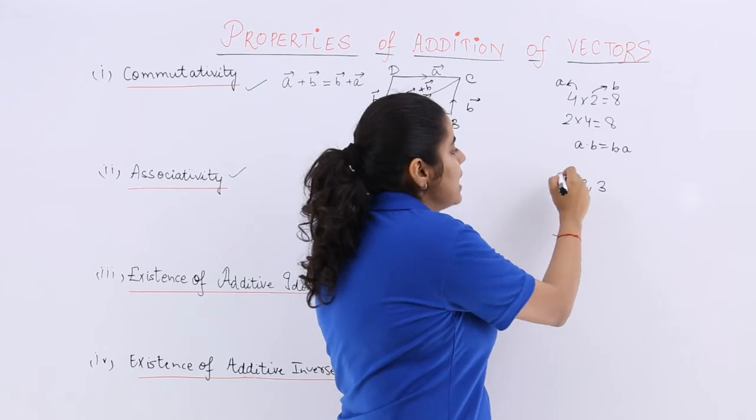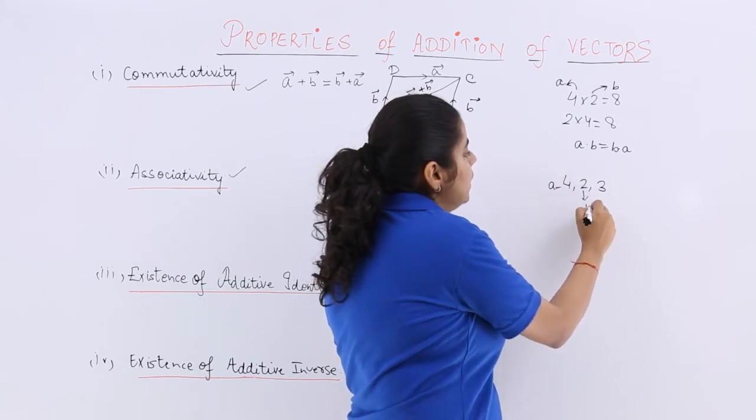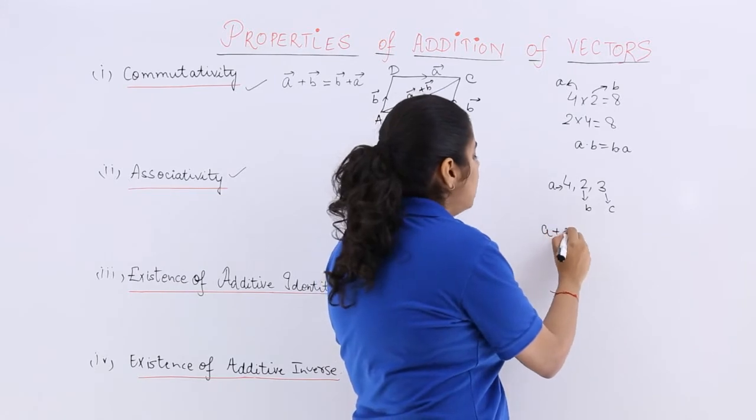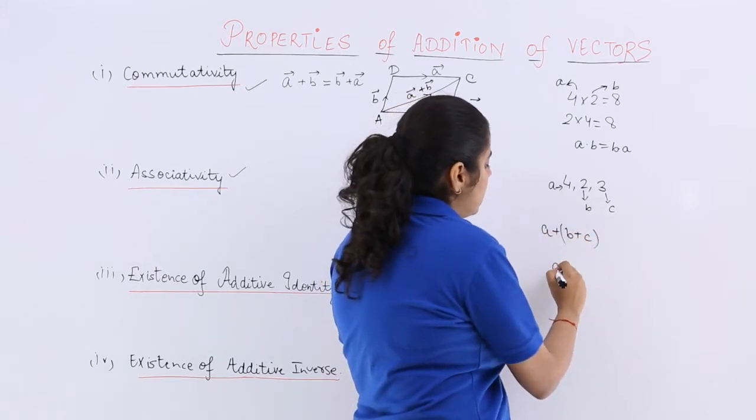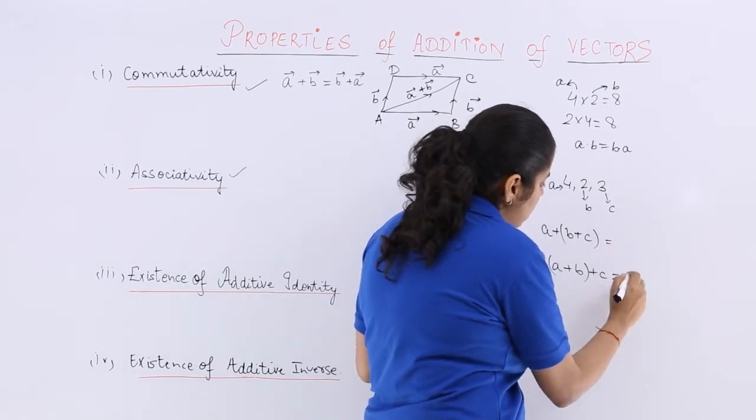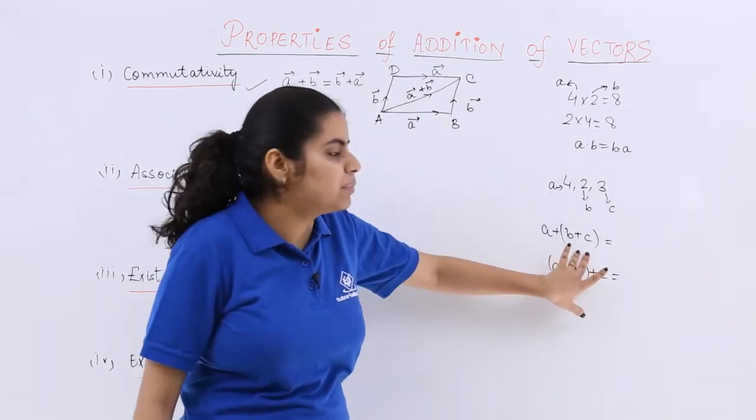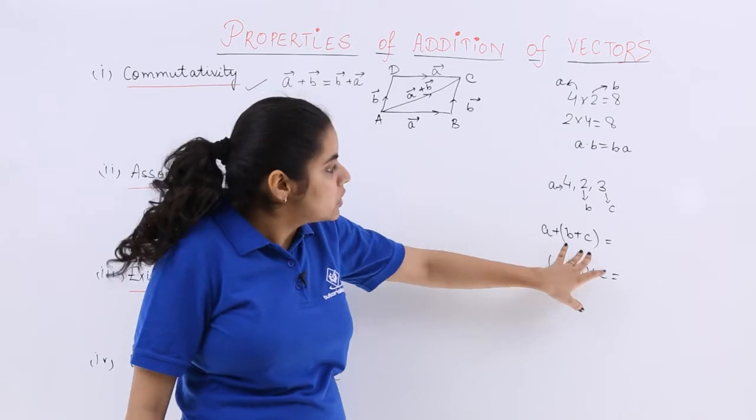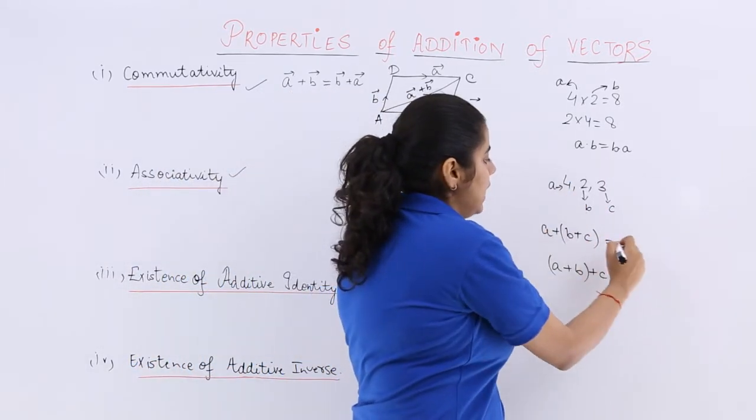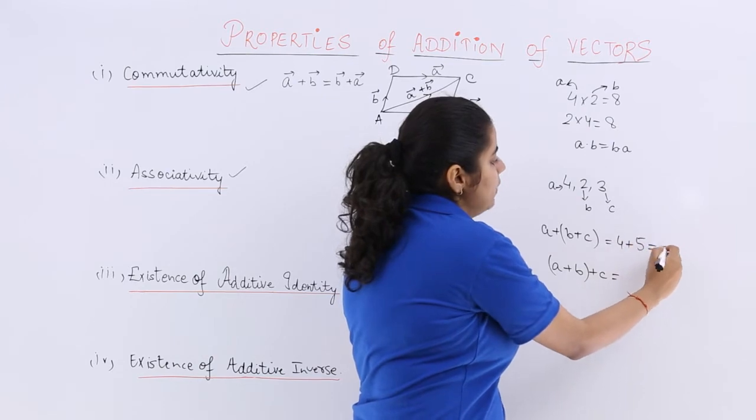This again I will show you with the help of mathematical numerical example. Suppose I have 4, 2 and 3 as A, B and C. Now what is A plus B plus C in these two senses? That means when I have a bracket, that means I have to solve the bracket first. So the bracket is 5 which is 2 plus 3 and A is 4. So 4 plus 5 which is 9.